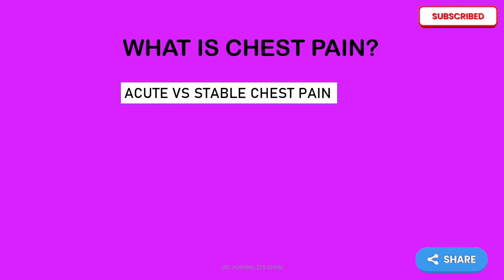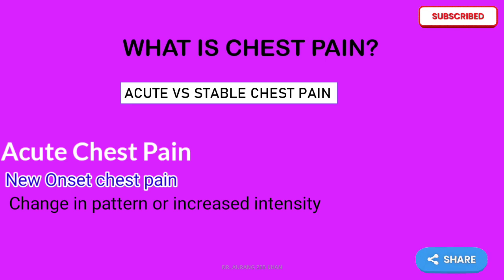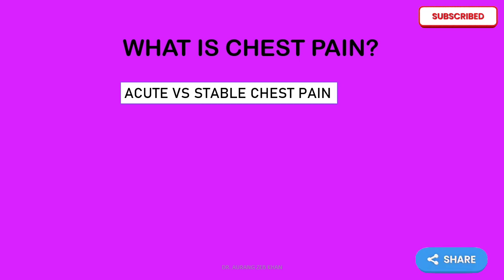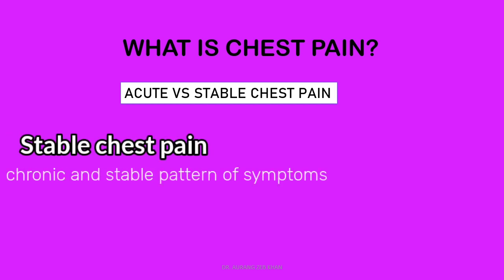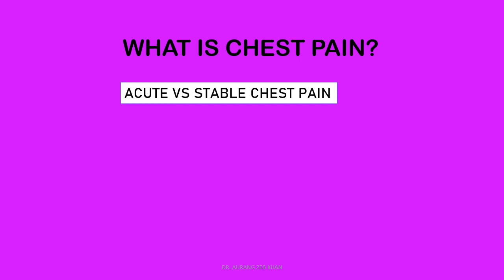What is chest pain? The most important step is to differentiate between acute and stable chest pain. Chest pain should be considered acute when it is new onset or involves a change in pattern, intensity, or duration compared with previous episodes in a patient with recurrent symptoms. On the other hand, chest pain should be considered stable when symptoms are chronic and associated with consistent precipitants such as exertion or emotional stress.